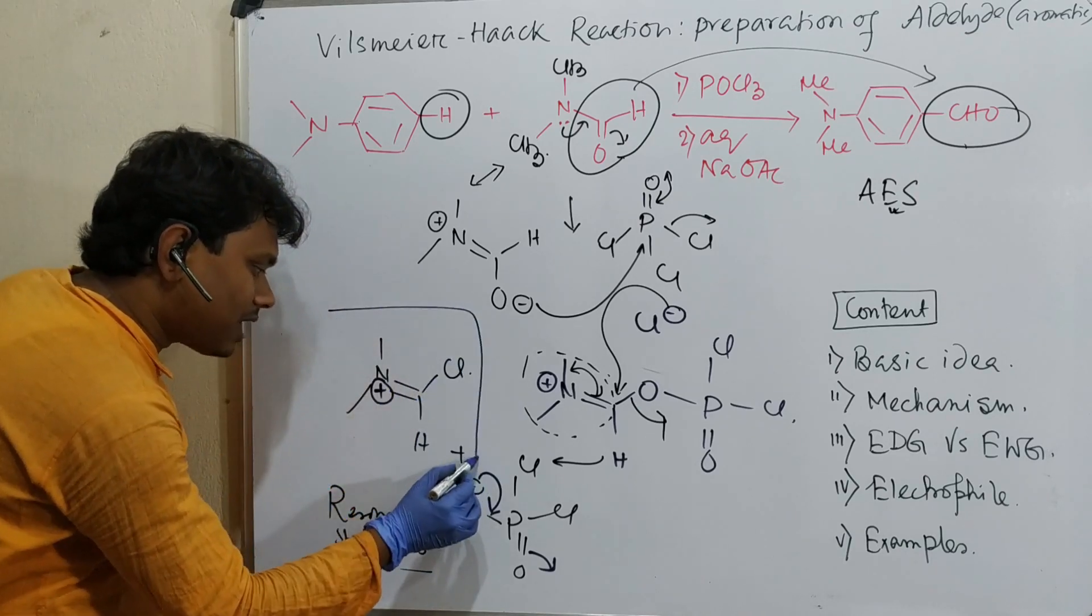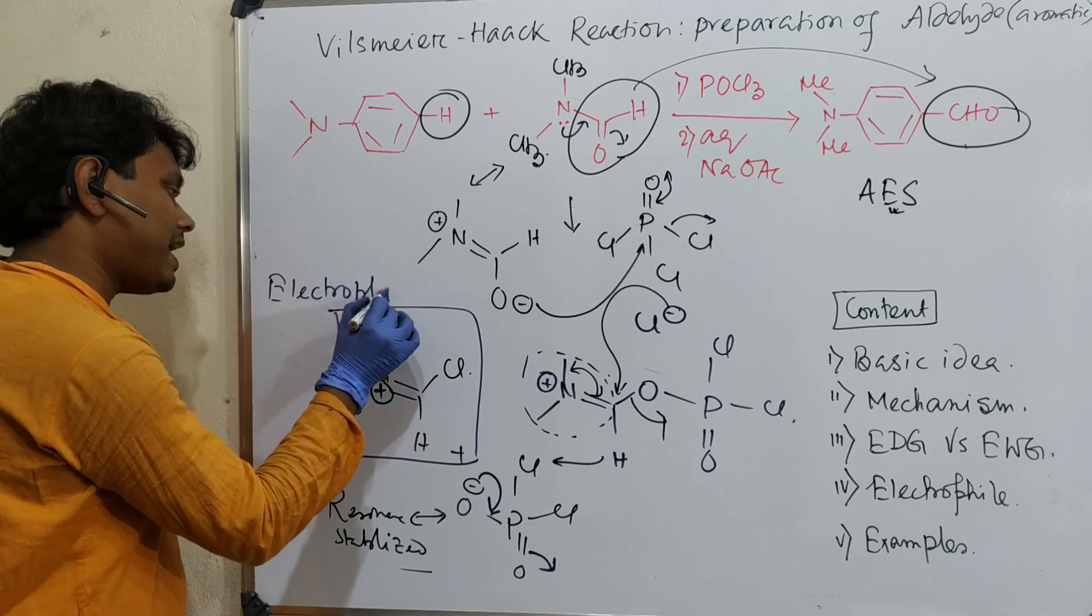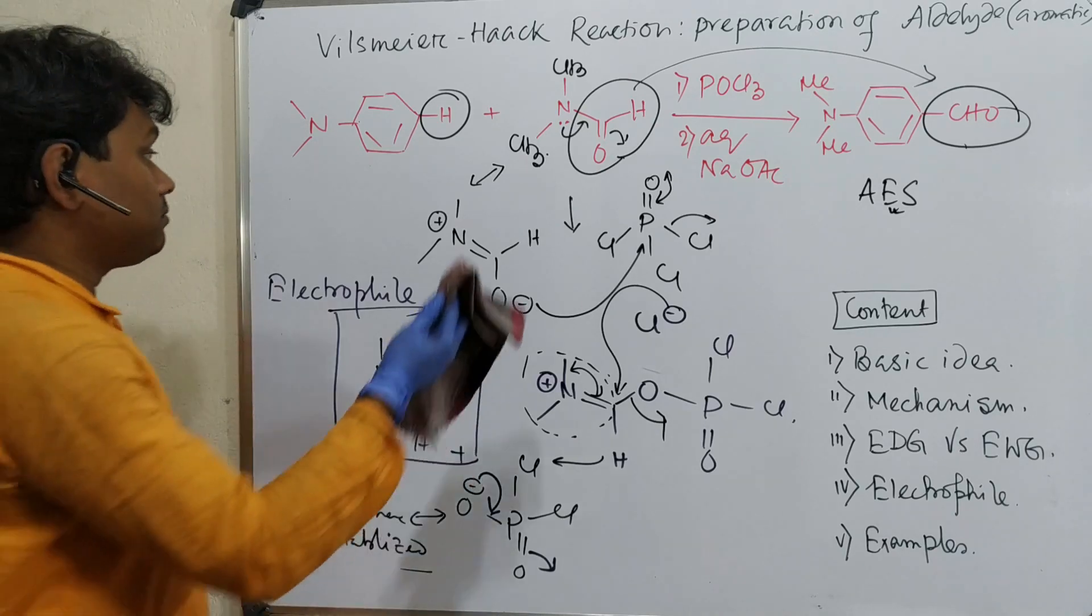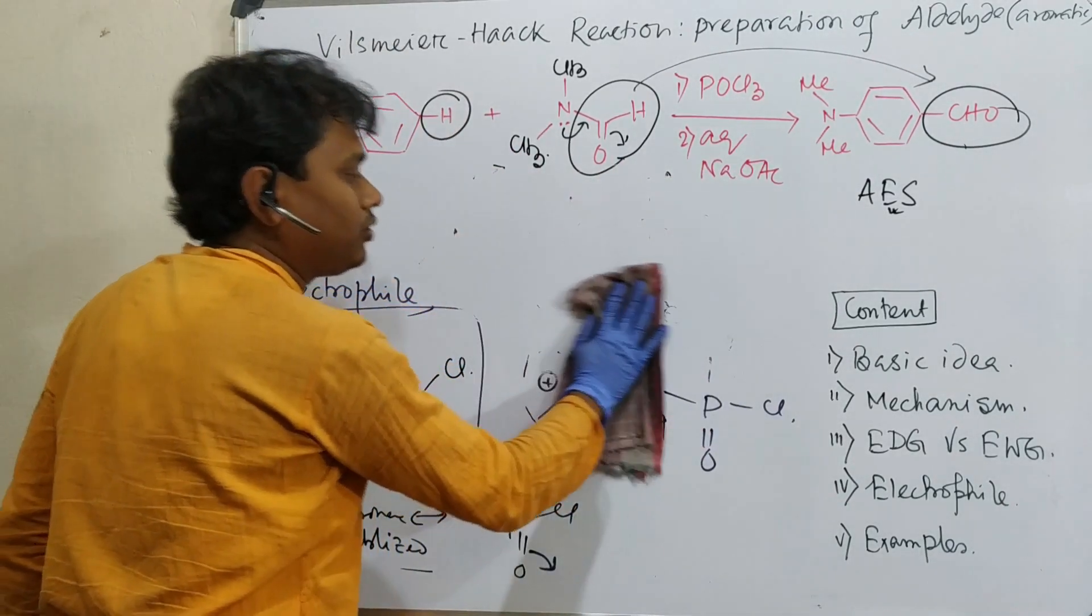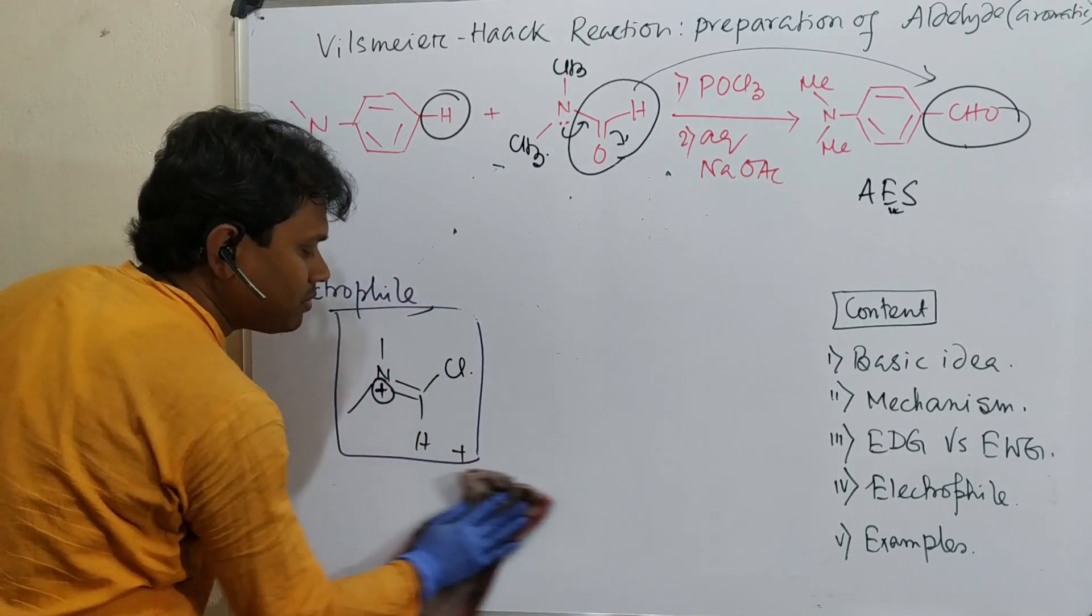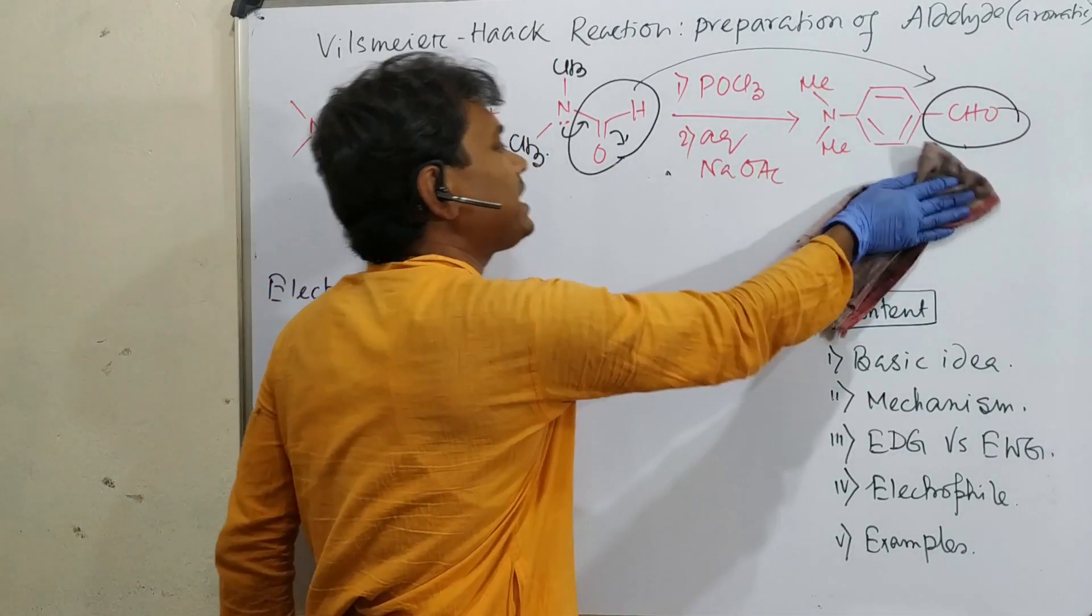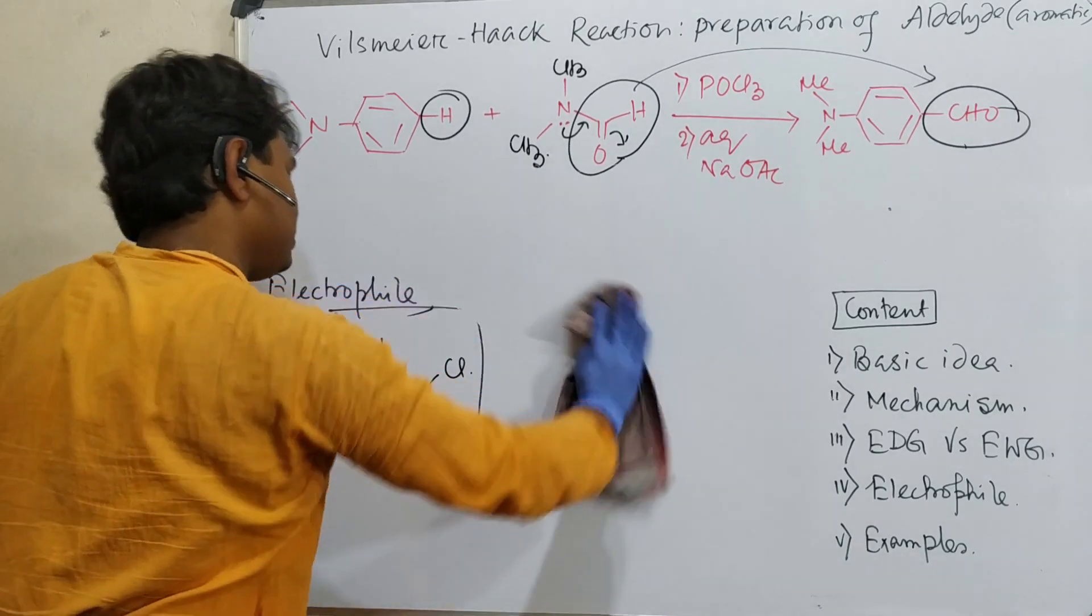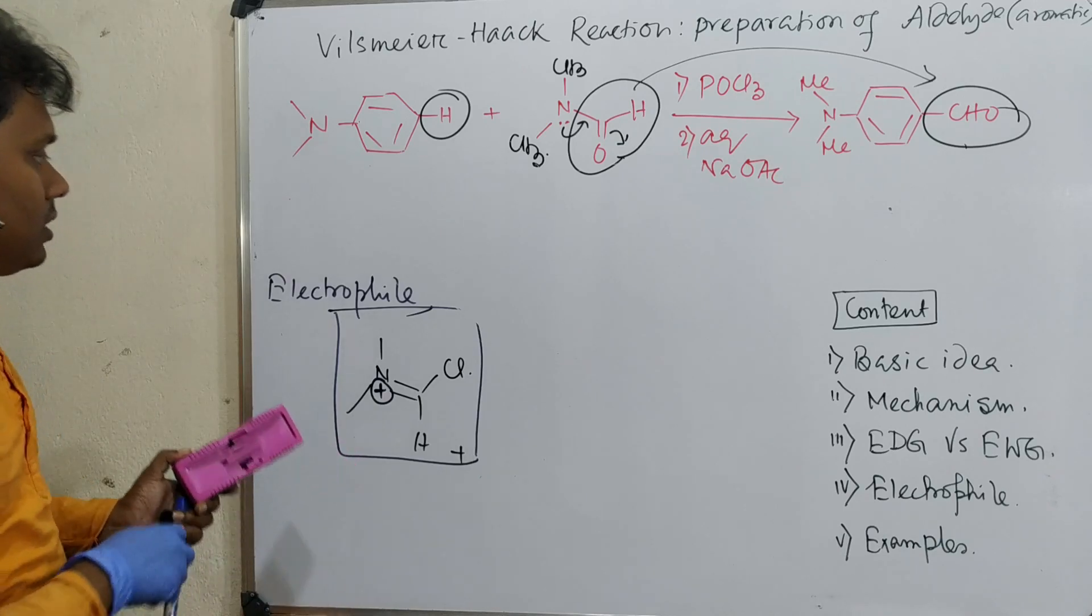This is our electrophile. I always suggest in Vilsmeier-Haack reaction, Gattermann-Koch reaction, and Gattermann aldehyde synthesis, please remember and make a note of which one is the electrophile. There's a chance you may make mistakes. An easy question could be what is the structure of the electrophile in your exams, or they can ask the mechanism. If you know the electrophile and forget other things, you can still write it.